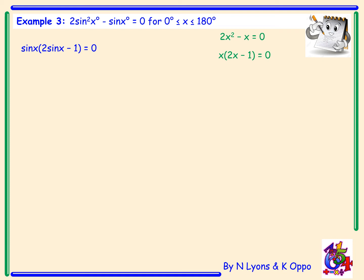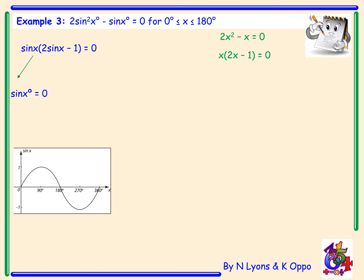We split each factor and equate each to zero. First, sin x = 0. Thinking about the sine graph, if you draw a quick sketch you'll see clearly there are 3 places the graph hits 0. Because we're only looking at x between 0 and 180, x solves to be 0 degrees or 180 degrees.